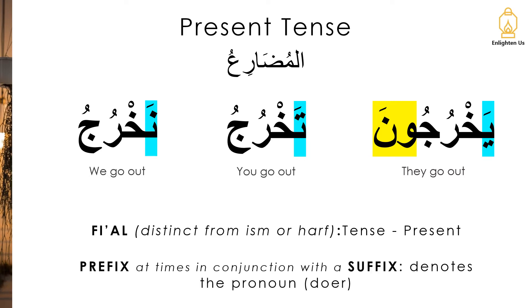In terms of the present tense, the prefix — so the يَ، the تَ، the نُون — at times combines with a suffix. So in يخرجون، we've got the وا and نون there as well. And that denotes the pronoun — who is taking action, who is doing what. So يخرجون means they go out، تخرجوا means you go out، نخرجوا means we go out. It's the prefix, and in this case the suffix combined with the prefix, that gives us that information.